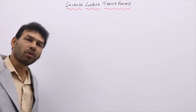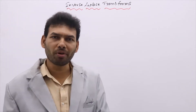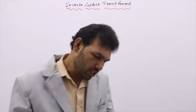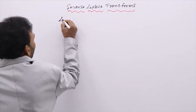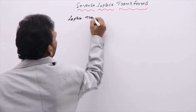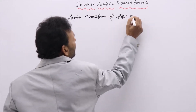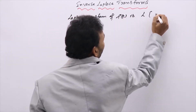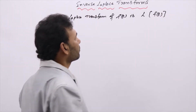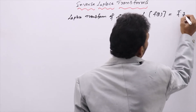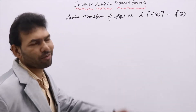Inverse Laplace transforms. We know Laplace transforms, and now we are going to find the inverse Laplace transform of a function. First, let us recall: the Laplace transform of F of t is written as L of F of t, equal to a function of s. So, Laplace transform of F of t is F bar of s.